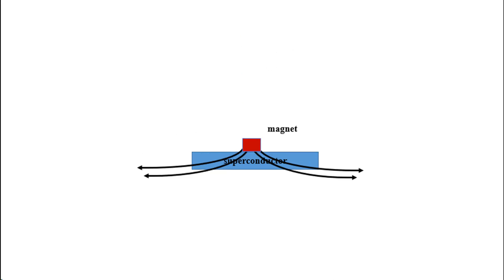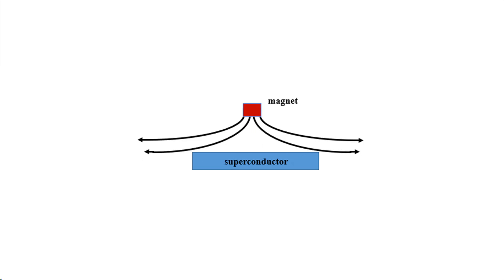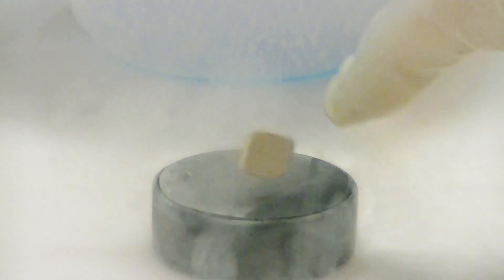If a magnet were actually to touch the superconductor, then its magnetic field would penetrate the superconductor. But that can't happen because superconductors repel magnetic fields. Because of this, a magnet placed above a superconductor levitates at the point where gravitational attraction and magnetic repulsion balance.